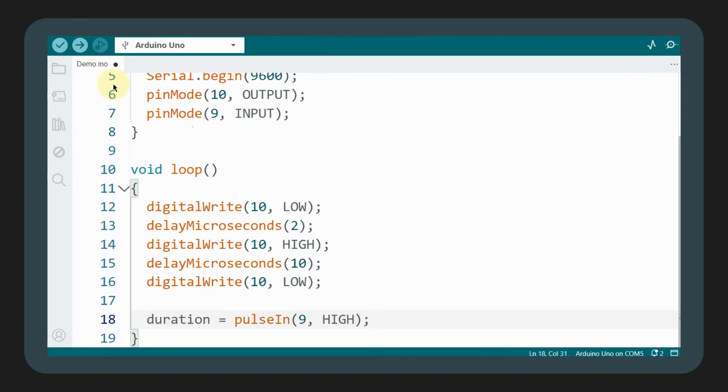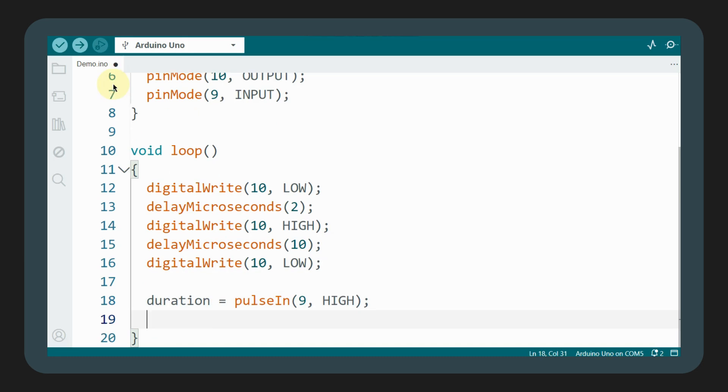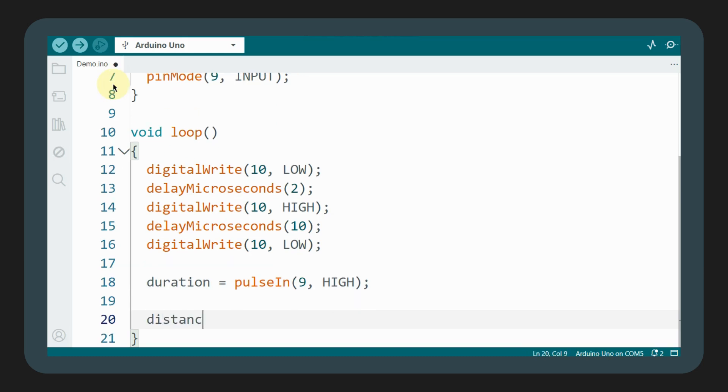We use the pulseIn function on the echo pin with the pulse type set to high and save its output to the duration variable. With the duration in microseconds, we apply the formula we discussed earlier to calculate the distance in centimeters.